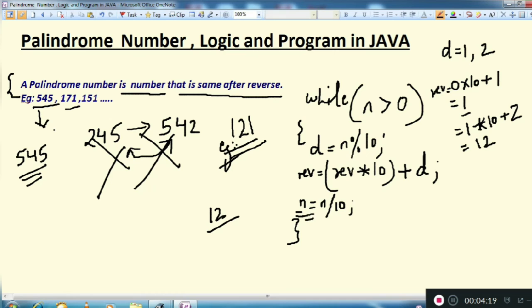Now n value becomes 1. Again it will do d value, again it will give you 1. Again you will be having 12 multiplied 10 plus 1, it will give you 121. So last value will be your 121. So 121 equals your original number 121.